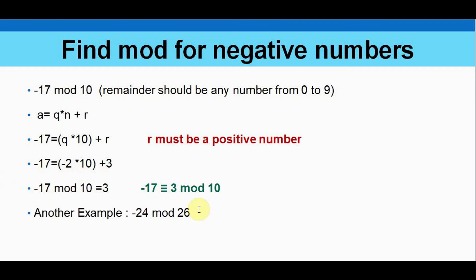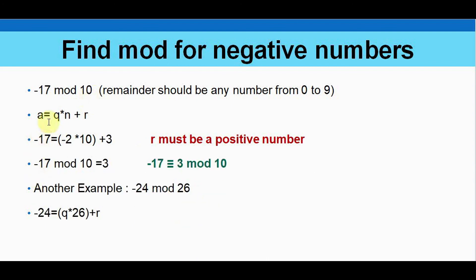We will take another example. Minus 24 mod 26. Again here it's a larger number compared to 10. So the remainder can be any number from 0 to 25. I am representing it using this formula. Minus 24 is equal to q into 26 plus r. Again here the quotient should be a negative number and we get the remainder as such.